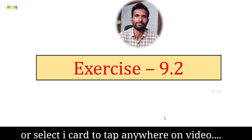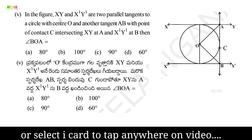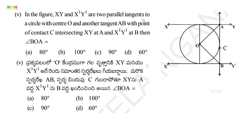Let's begin the topic. Next problem, the fifth one: in the figure, XY and X1Y1 are two parallel tangents to a circle with centre O, and another tangent AB with point of contact C intersecting XY at A and X1Y1 at B. Then angle BOA is equal to 90 degrees.